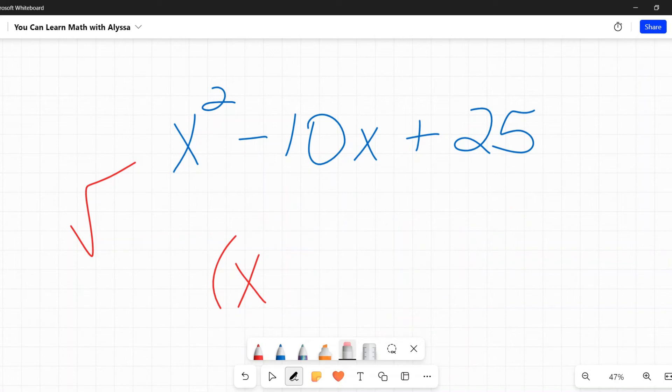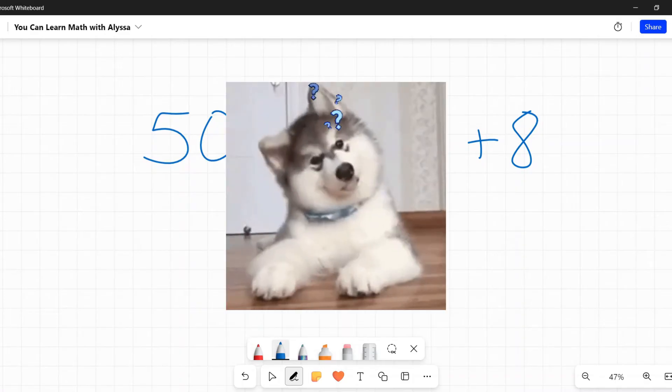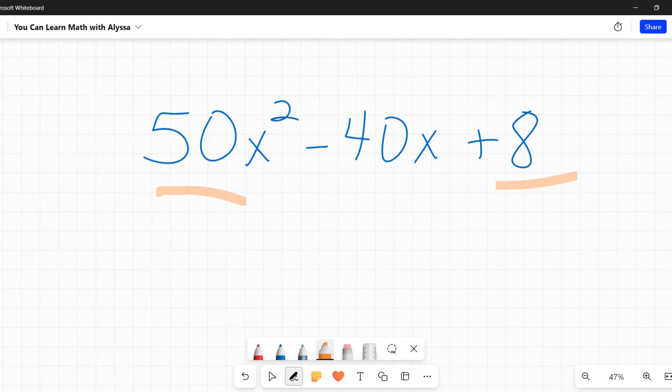We said the middle term should be 2 times my first term, that's x, times my last term, negative 5. 2 times x is 2x. 2x times negative 5 is negative 10x. That checks out. Now there's a couple of wrinkles they're going to throw your way. The first wrinkle would be something like 50x squared minus 40x plus 8. And you're like, last I checked, 50 is not a perfect square.